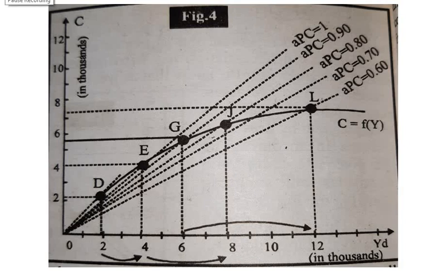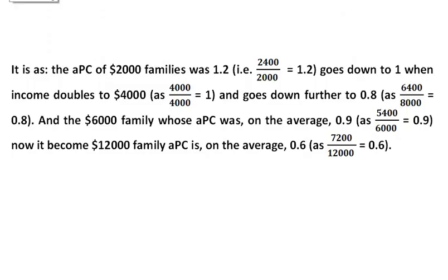Thus, it is concluded that it is the absolute level of income of the family which controls the allocation of income between consumption and saving. Moreover, average propensity to consume (APC) of average family declines as families move up to higher income levels.